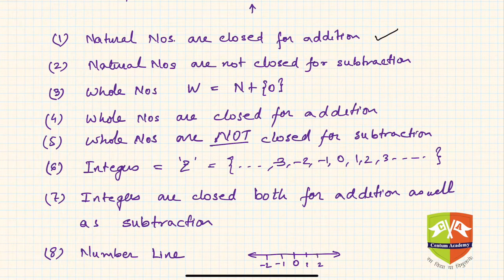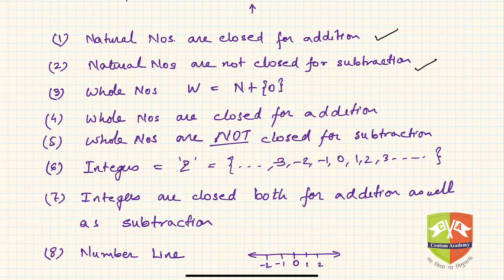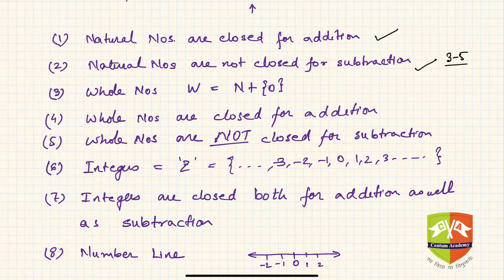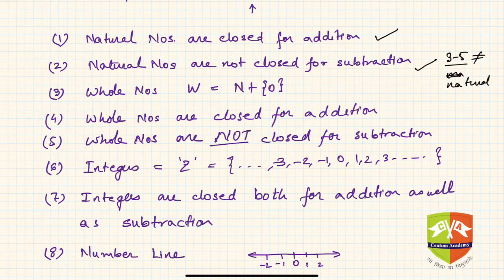We also learned a few properties. Natural numbers are closed for addition — adding two natural numbers always gives a natural number. But natural numbers are not closed for subtraction, because subtracting a larger from a smaller may not give a natural number. For example, 3 minus 5 is not a natural number. Whole numbers are simply natural numbers plus 0.